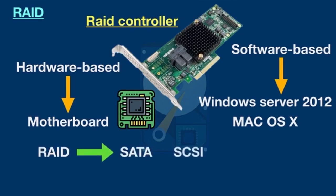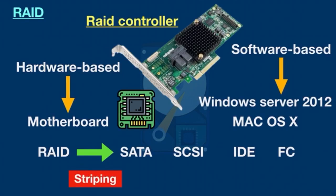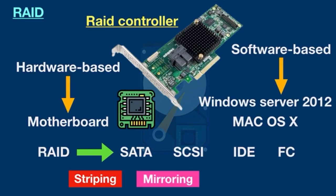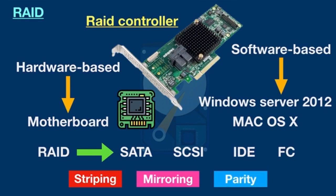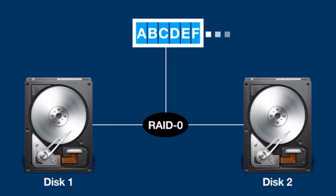There are some techniques used in RAID for data storing. Striping: data is split between multiple disks. Mirroring: data is mirrored or copied between multiple disks. Parity, also known as checksum: parity is a calculated value used to rebuild data.